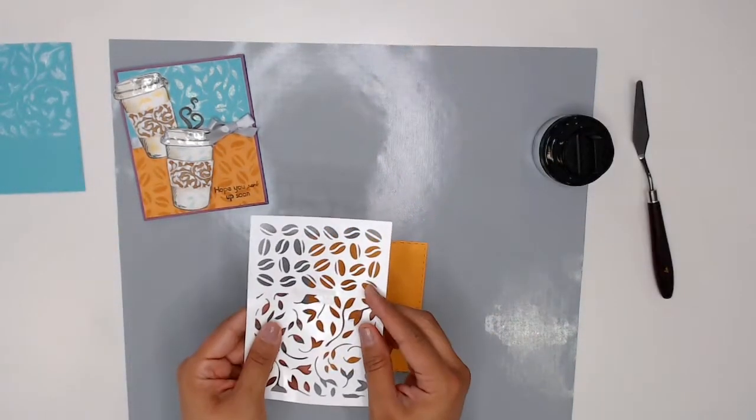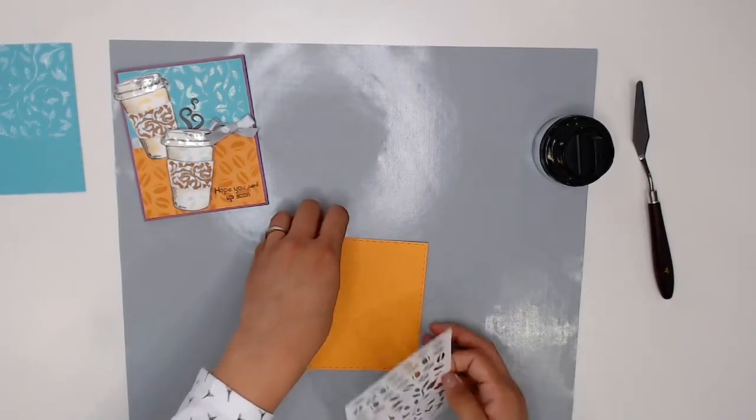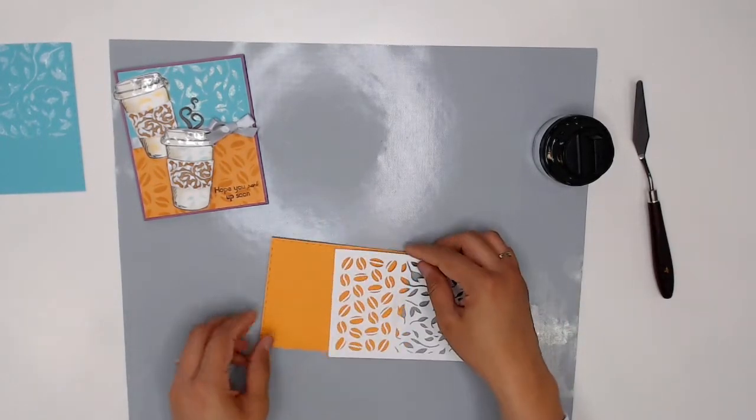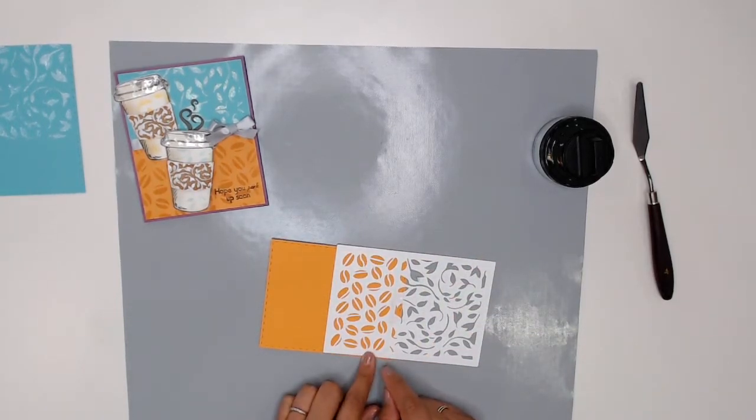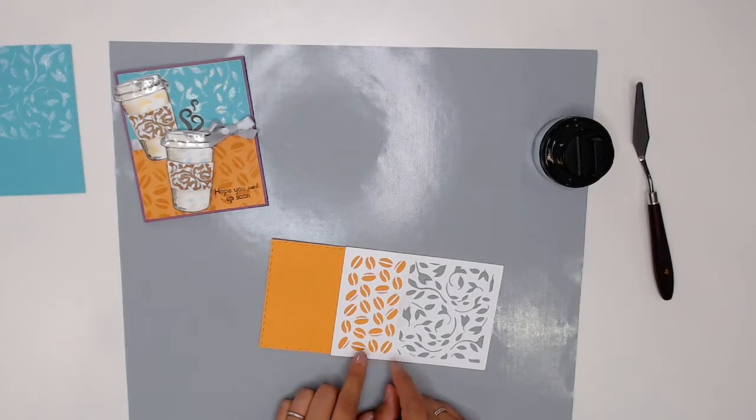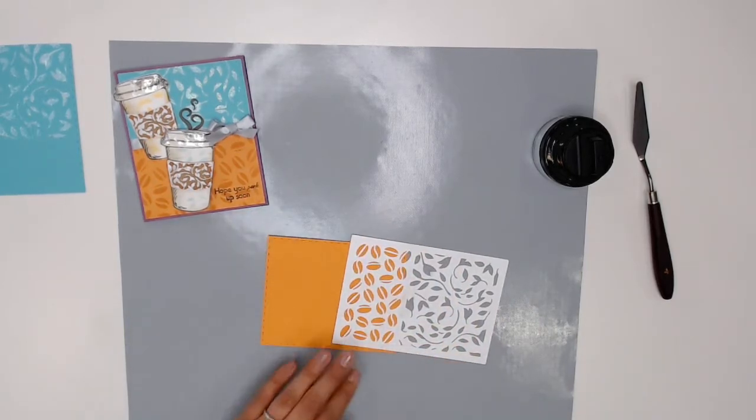I also want to use the coffee bean pattern on my stencil. I think it's really cute and I just love this theme because who doesn't like a nice cup of coffee. Now for this I'm going to be using my Distress Inks by Tim Holtz and the color I'm going to use is Wild Honey and I'm going to use a mini ink blending tool to just add some color right on top.